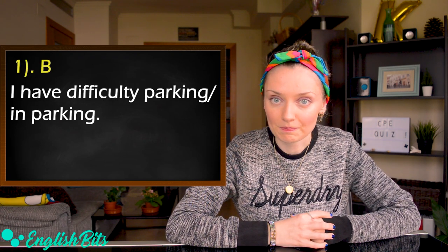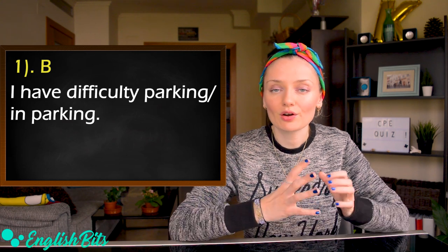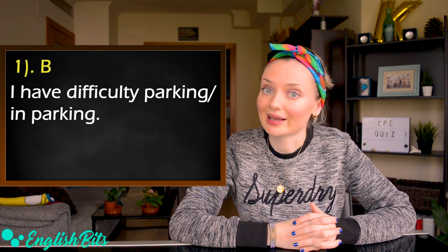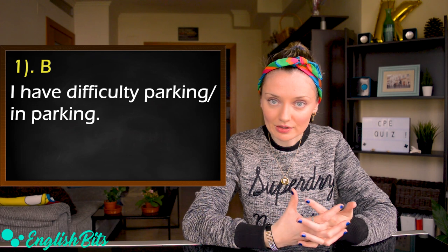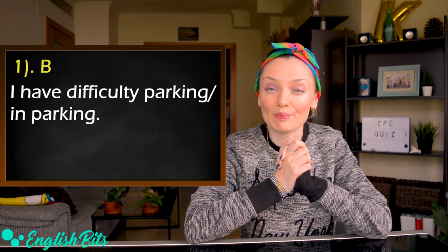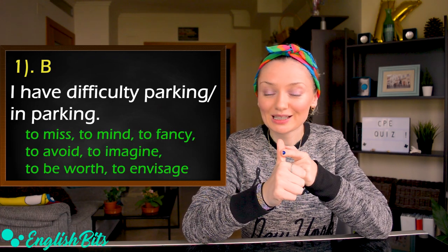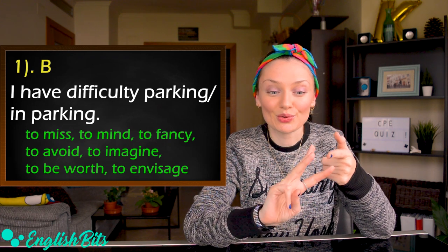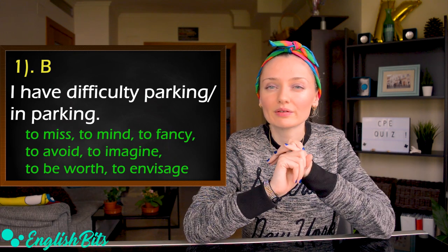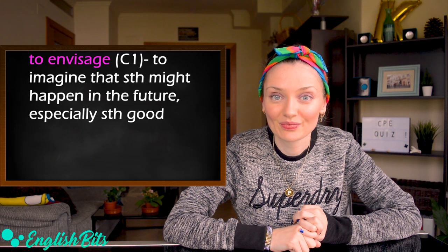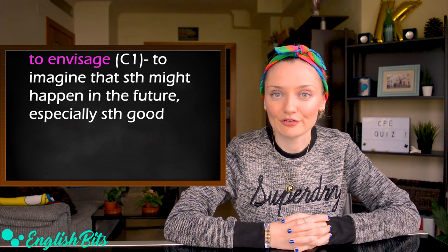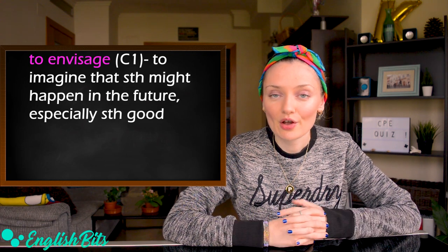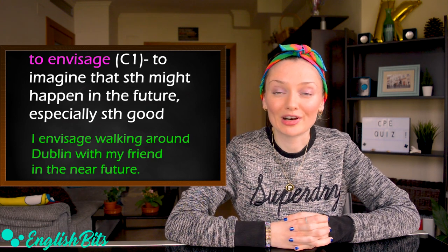The correct answer for sentence one is B: I have difficulty parking. It's also correct to say 'I have difficulty in parking.' So 'difficulty doing something' or 'difficulty in doing something' — the verb to have difficulty takes the gerund form. More verbs followed by -ing include: to miss, to mind, to fancy, to avoid, to imagine, to be worth, and a C1 verb — to envisage — which means to imagine that something might happen in the future, especially something good. For example: I envisage walking around with my friend in the near future.